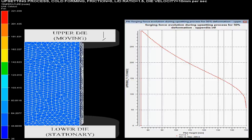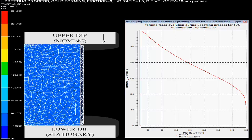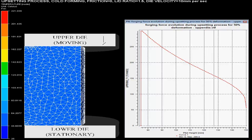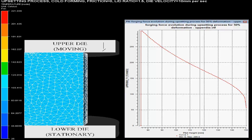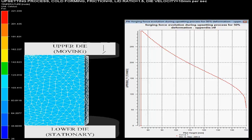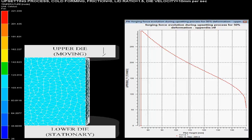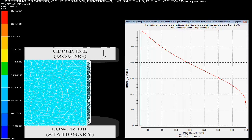In this simulation, only one fourth of the part is shown. This is because the upsetting process is axi-symmetric, so only one quarter of the process is simulated to save computation time.